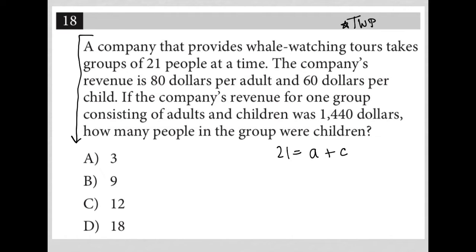The second sentence is saying it's $80 per adult. So 80 times A will give me how much money they're making per adult, and 60 times C will give me how much money they're making per child.